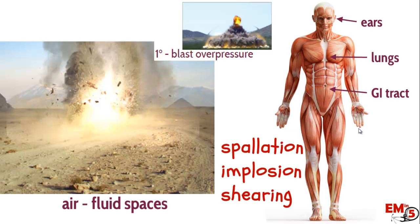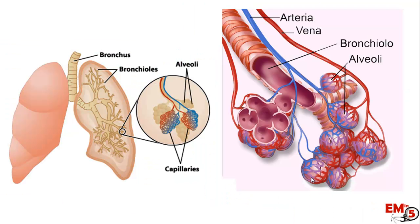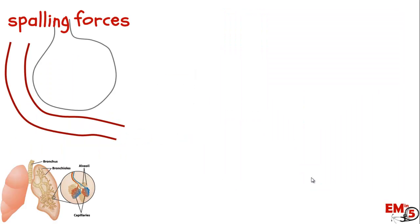Let's start off with primary injury — I think it's one of the hardest to understand. This primary injury is caused from the blast overpressure, that shock wave, and it mainly affects spaces in the body that have an air-fluid interface. For example: the ears, the lungs, the GI tract. Let's talk about the lungs — this has the interface of the capillaries and the alveoli as your air-fluid interface. When the shock wave hits,